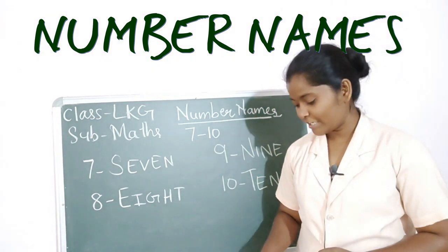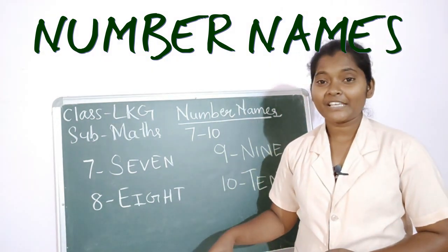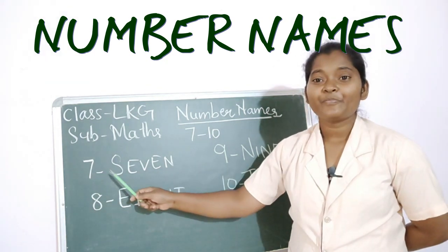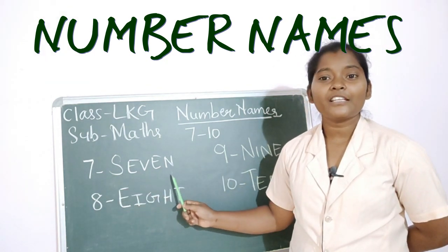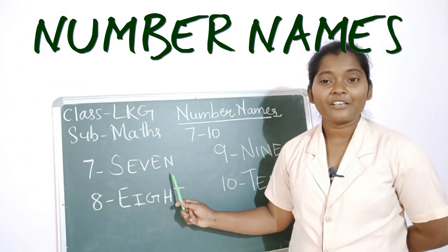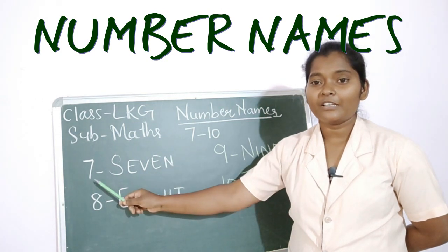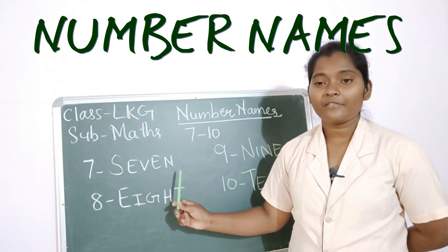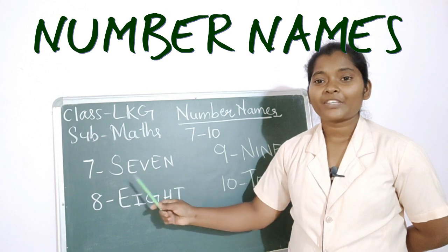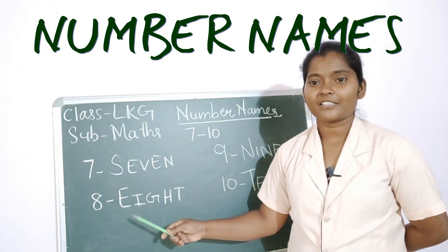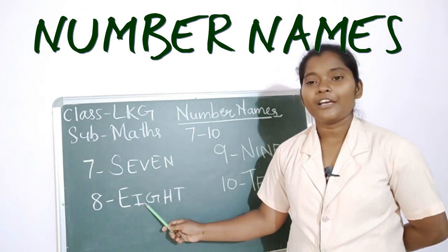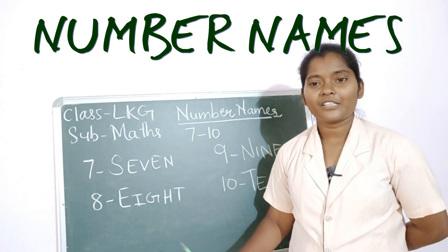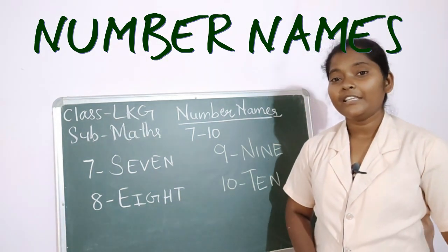Say the number names with me, okay? Say loudly. Seven — S E V E N — seven. Say: seven, S E V E N, seven. Yes! Eight — E I G H T — eight. Say children: E I